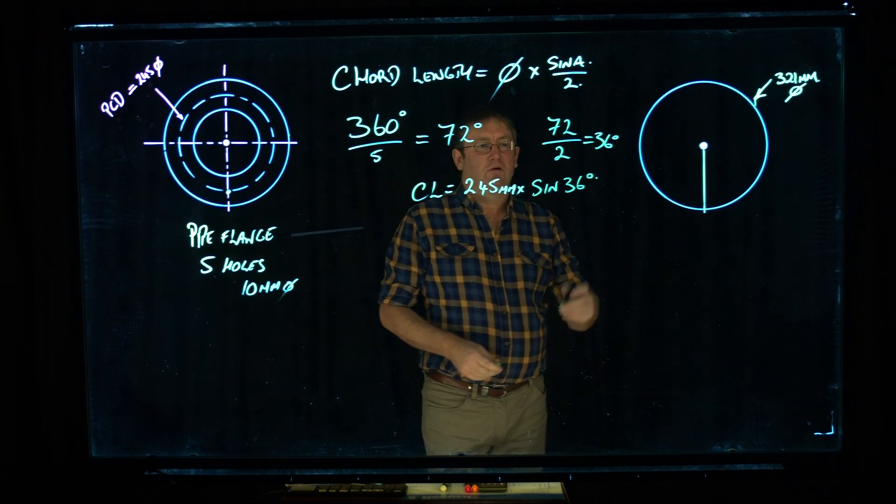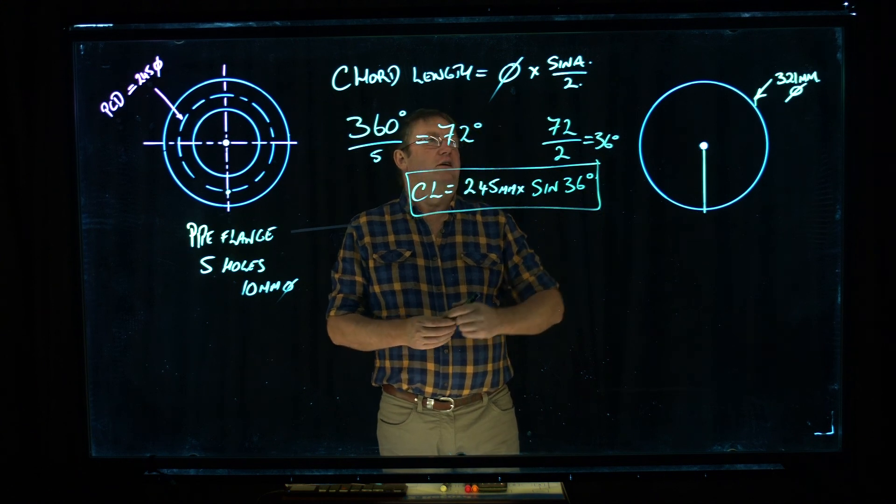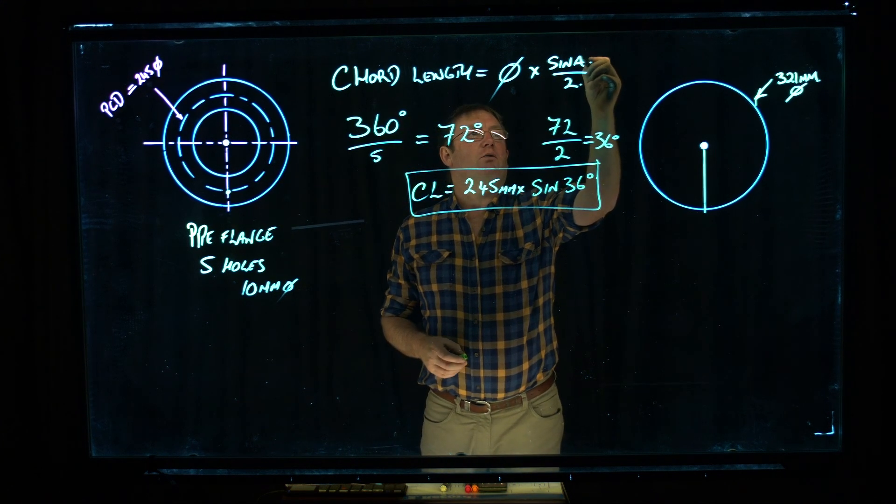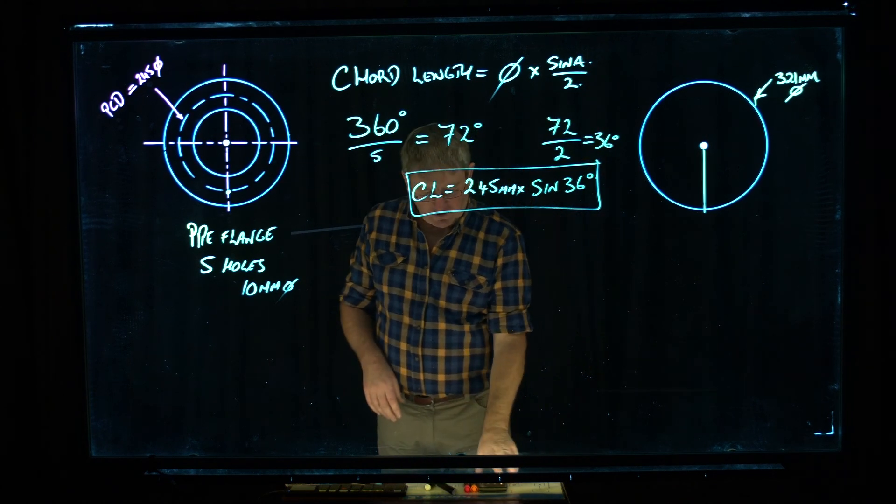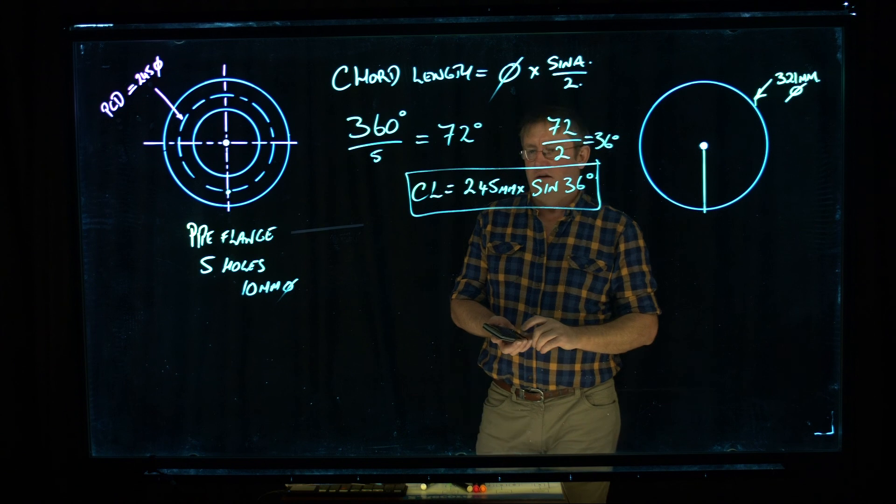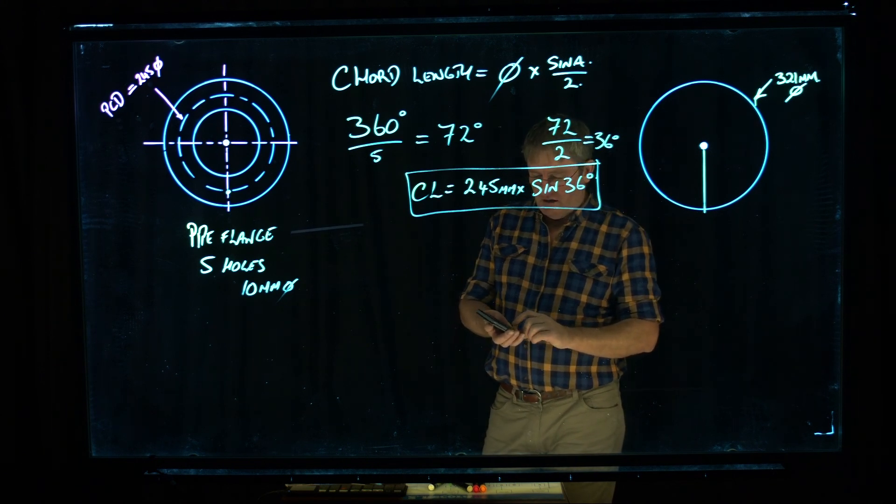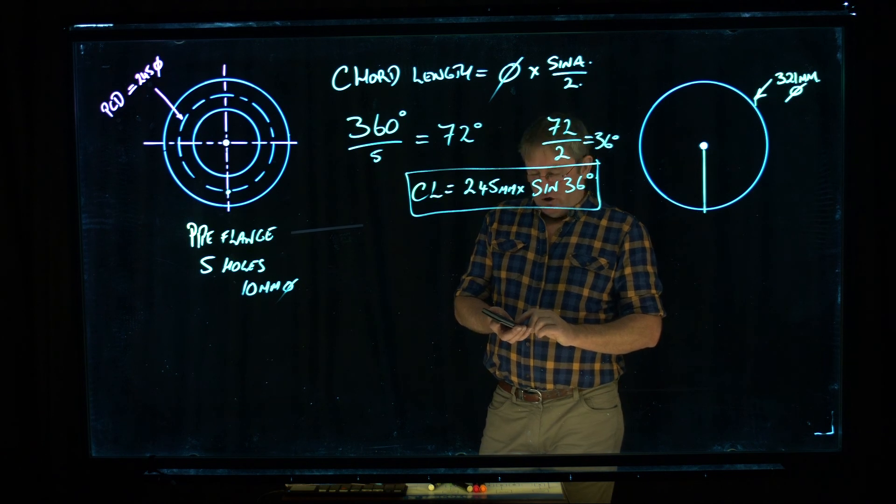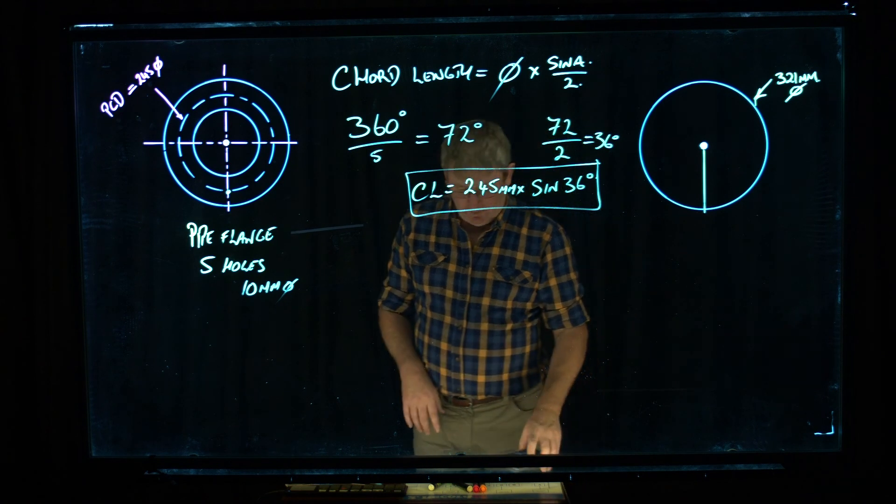That's the actual equation that you're going to use. So the 72 would have gone up here where the A is, but you have to divide it by 2 before you use it as a sine function. So I'm going to do that on the calculator. So I've got 245mm times sine 36. Push equals, and that gives me 144mm.